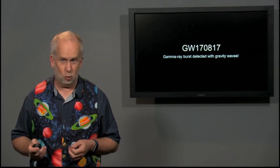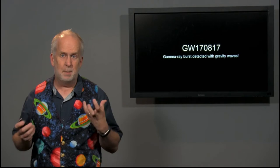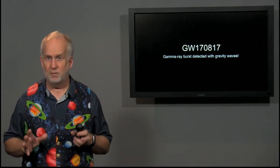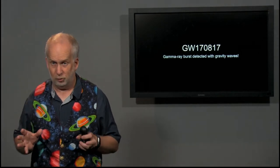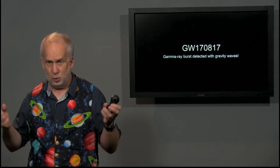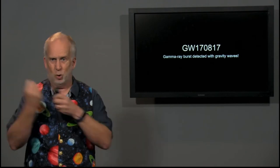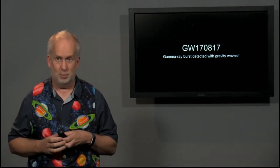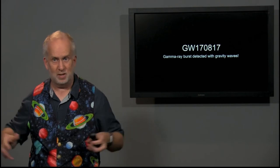Gravitational waves are caused whenever big massive things accelerate like crazy. We're going to talk much more about gravitational waves in the Violent Universe part of this course. But basically, whenever you get neutron stars or black holes accelerating like crazy—which often means they're about to collide with something else—you get ripples of space-time that come out.